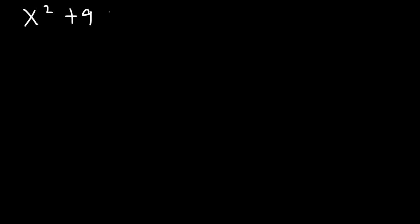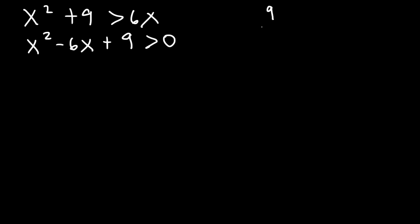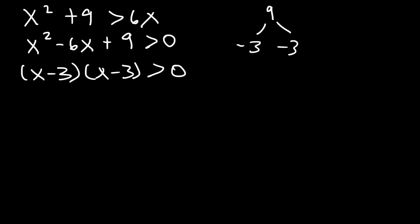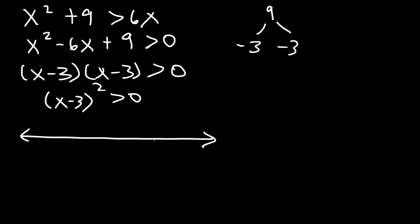Let's try another example. Say we have x squared plus 9 greater than 6x. We need to get 0 on one side, so subtract 6x from both sides, giving x squared minus 6x plus 9 on the left. We need two numbers that multiply to 9 and add to negative 6 — that's negative 3 and negative 3. So it factors as x minus 3 times x minus 3, which is a perfect square trinomial, written as x minus 3 squared. Setting x minus 3 equal to 0 gives x equals 3, so we have one point of interest.